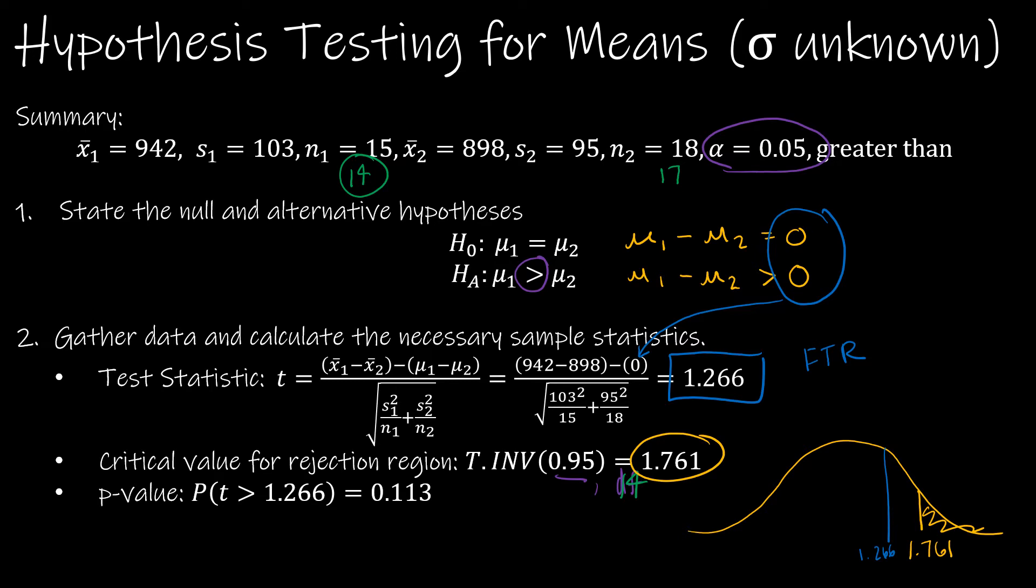Same thing. If we find our T value, remember, this is a one tail test and I'm going to the right. So this would be T dist right, because the T distribution is nice enough to give us a right tailed test version. And then of course, we're just using 1.266. And again, the degrees of freedom of 14. Because P is greater than alpha, again, it tells us to fail to reject.